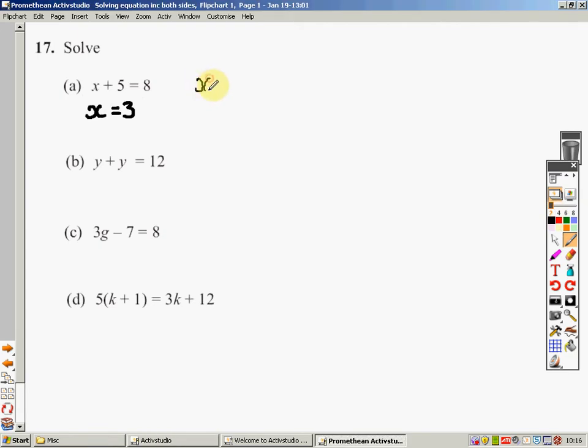We start with x. We then add 5 to it, and that gives us 8. To undo that, the opposite of adding 5, or the inverse, is to take 5, which will leave us with 3. And I know that x equals 3. And I can check that 3 plus 5 is 8.